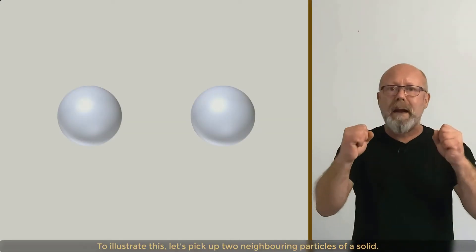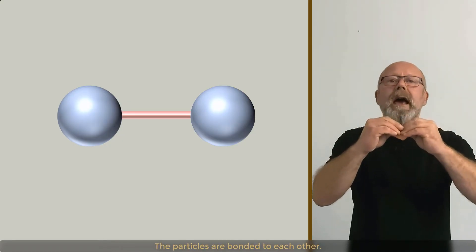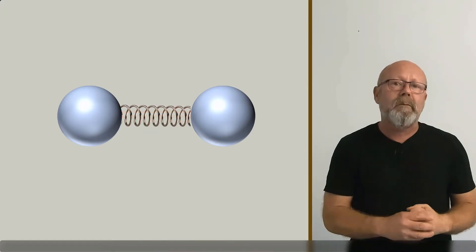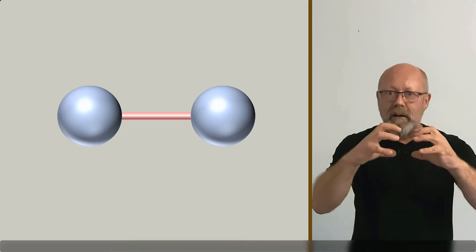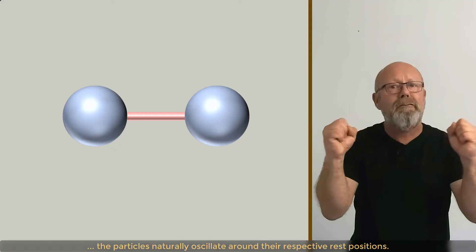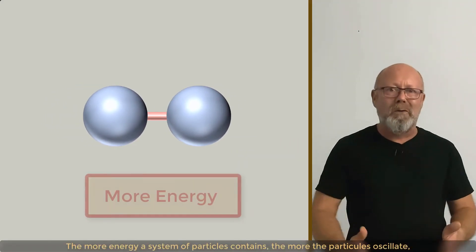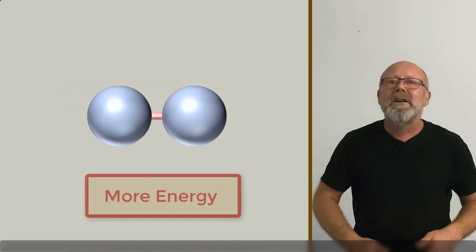To illustrate this, let's pick up two neighboring particles of a solid. The particles are bonded to each other, and that bond can be modeled quite accurately with a little string. So, if that system of two particles contain energy, the particles naturally oscillate around their respective rest positions. The more energy a system of particles contains, the more the particles oscillate.